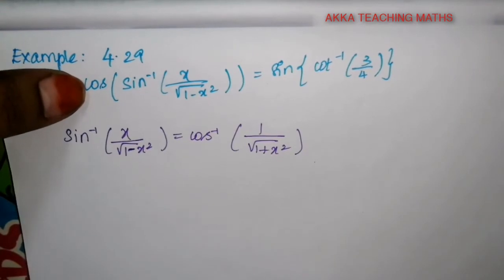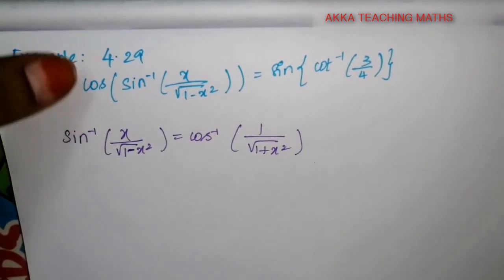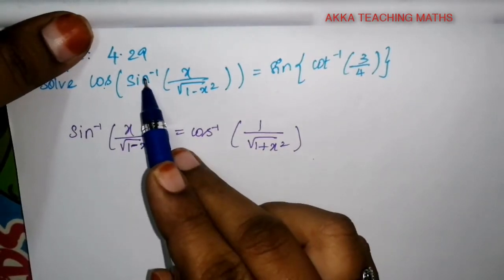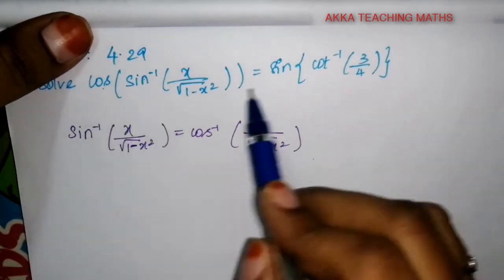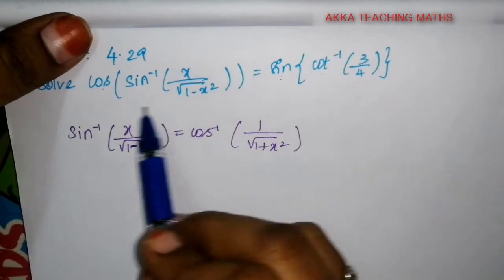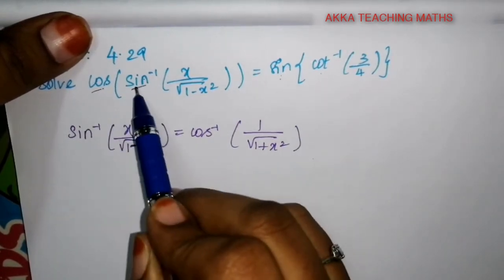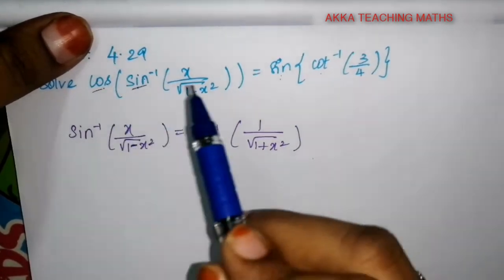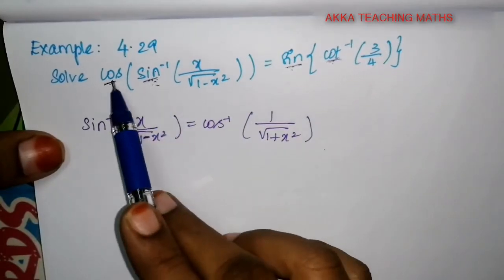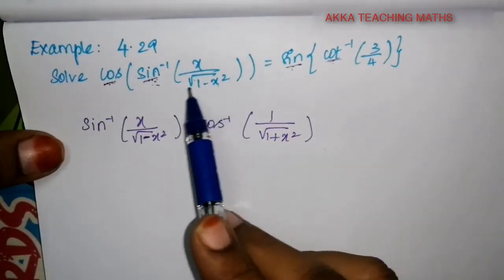We have to solve and find the final value of x. So now we have cos of sin inverse. We need to change the sin inverse, and then change to cos inverse. So first, we change the cos inverse of x divided by root of 1 minus x square.